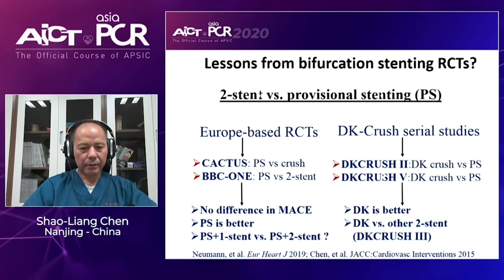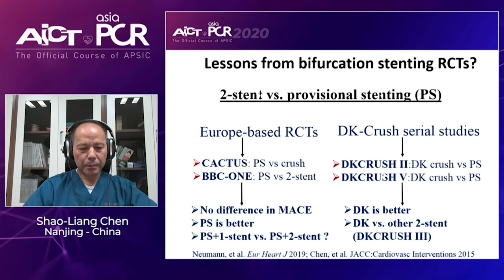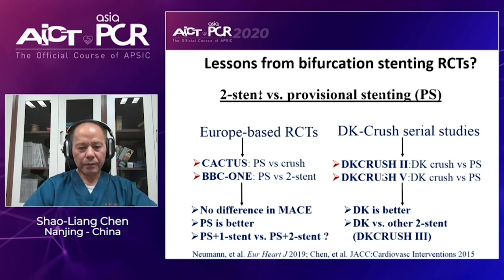CACTUS and BBC One studies compared provisional with the Culotte CRUSH or different kinds of two-stent techniques. However, at one-year follow-up, there was no significant difference in terms of MACE. So in general, the conclusion could be that provisional stenting technique is somehow better than two-stent technique. But the remaining question is the difference between provisional with one stent compared with provisional with two-stent technique.